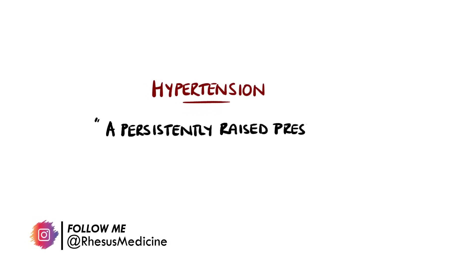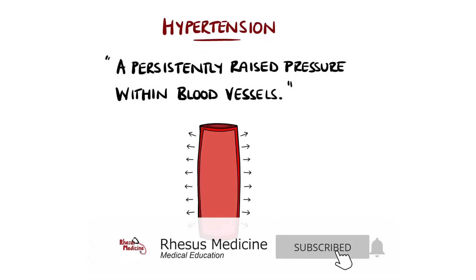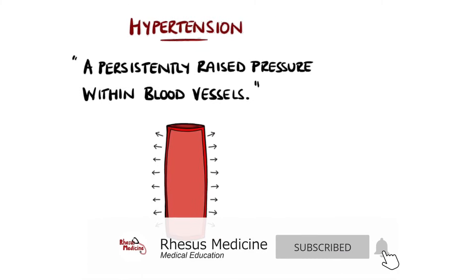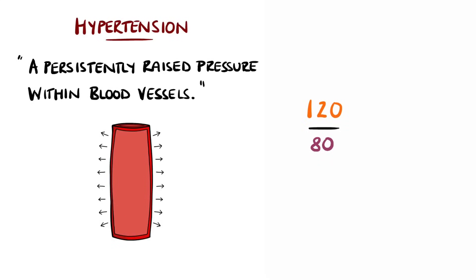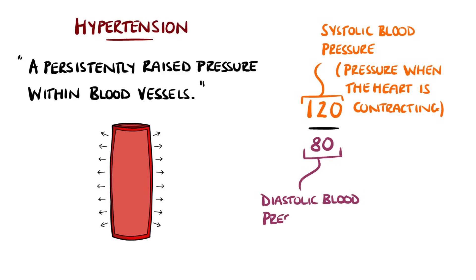Hypertension means a persistently raised pressure within a space — in this case the blood vessels, specifically the arteries — typically shown as two numbers. The top number is known as the systolic blood pressure and reflects the pressure within the arteries during systole, meaning when the heart is contracting. The bottom number is the diastolic blood pressure, the pressure in the arteries when the heart is relaxing.